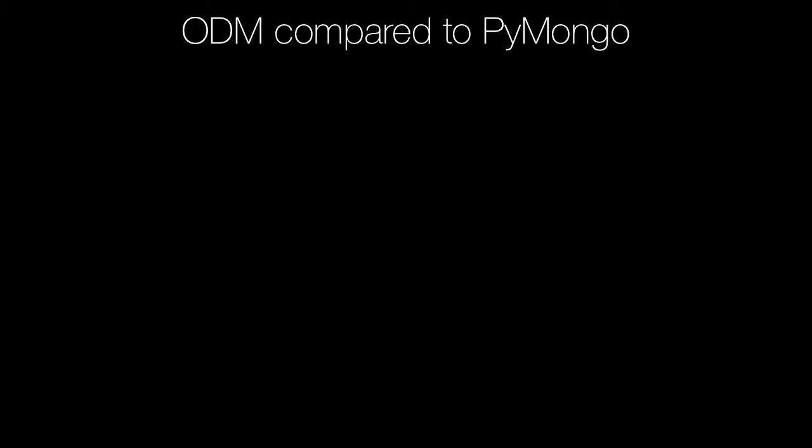Let's compare the ODM style of programming against the most basic, lowest level way to interact with MongoDB from Python, called PyMongo. Every programming language that can talk to MongoDB — and there are many, 20 or 30 or so — has what's called a driver, typically provided by MongoDB the company itself. PyMongo is no different; it's the low-level foundational way to talk to MongoDB in the native query syntax, this JavaScript JSON style of interacting with the database.